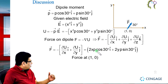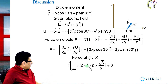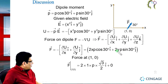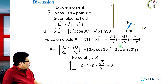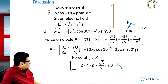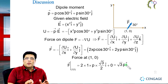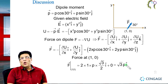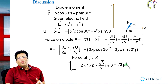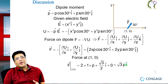Now substituting the coordinate (1, 0): for x equal to 1 and y equal to 0, the y-term vanishes. So the force equals 2 times 1 times p cos 30, which is p times root-3 over 2, giving a final result of root-3 p i-cap. This is the force on the dipole placed in the non-uniform electric field.